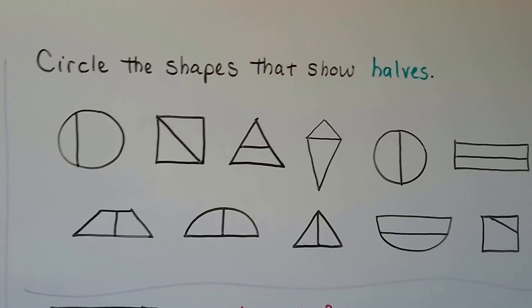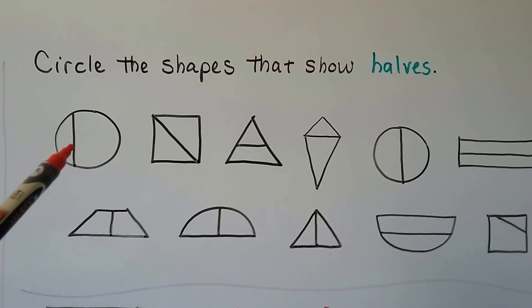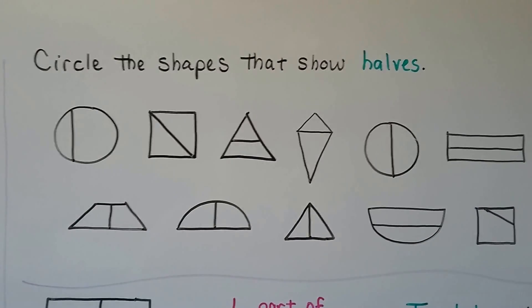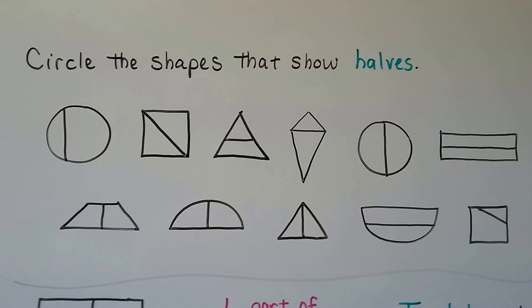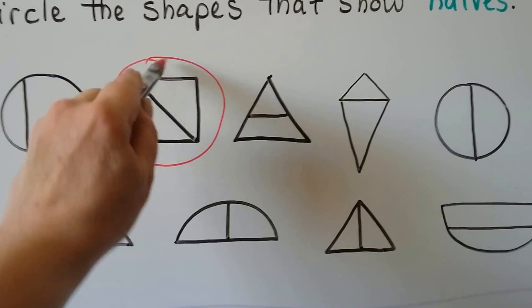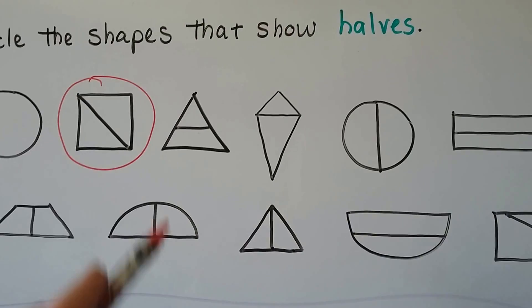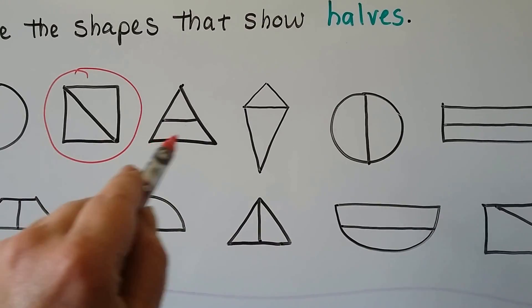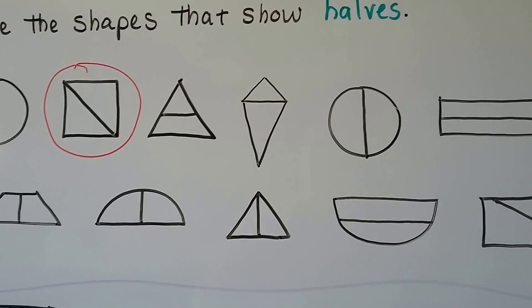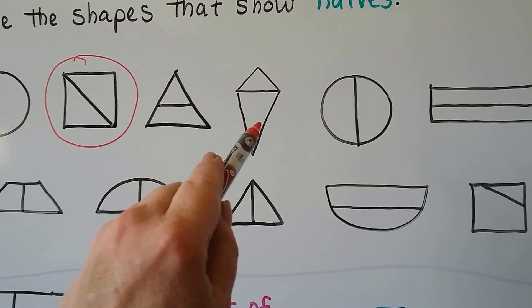Circle the shapes that show halves. Does that show equal shares? No, because there's a big side and a little side. Does that square show halves? Yes, it does. Does this triangle show halves? No — we have a little triangle and then we have a trapezoid, so that doesn't show halves. What about this one? Does that show equal shares? No — we have a little triangle and a big triangle, so they're not equal.